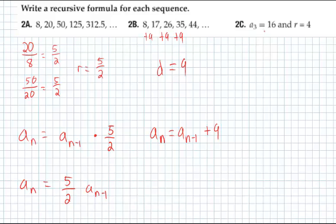Here they tell you that the third term is 16 and that R is 4. Well, if they're using R, then obviously it's geometric and they're telling you what R is. So it's going to be A sub n is 4 times previous term, A sub n minus 1.